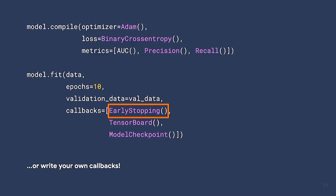You can pass in different metrics — TensorFlow 2 has nice built-in metrics for precision and recall, and you can also write custom metrics. Something really helpful that new developers often overlook is callbacks. One of my favorites is early stopping — when training models we need to prevent overfitting, and callbacks can automatically make plots of your loss over time. You can also write custom callbacks; for example, you could write one to send you a Slack notification after every epoch of training completes.